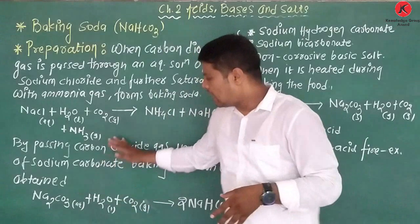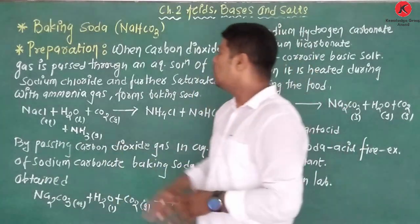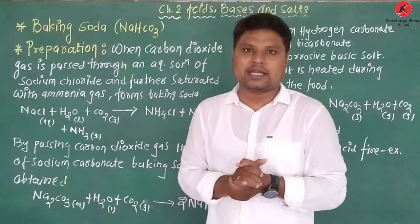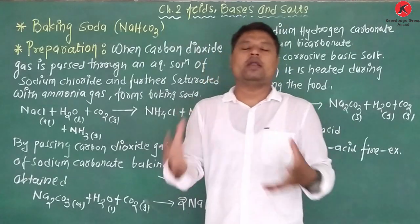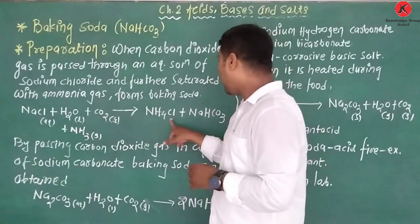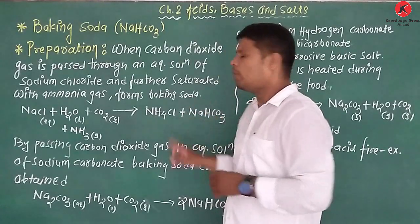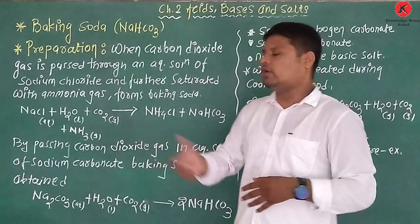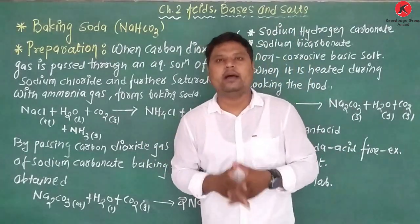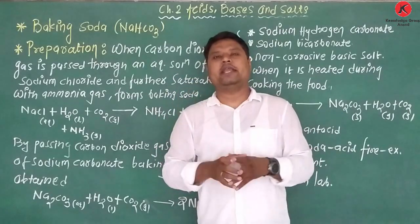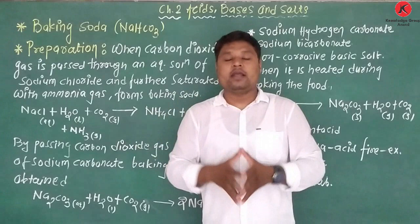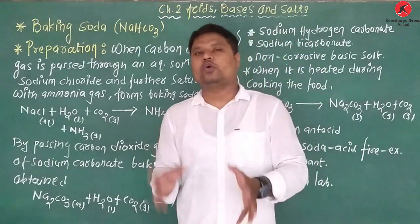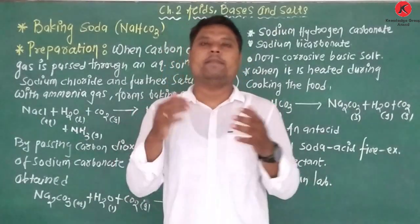Sodium chloride aqueous solution with carbon dioxide gas forms ammonium chloride and sodium hydrogen carbonate. By passing carbon dioxide gas through an aqueous solution of sodium carbonate, Na₂CO₃, sodium hydrogen carbonate is obtained. Sodium hydrogen carbonate is also called sodium bicarbonate.